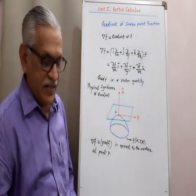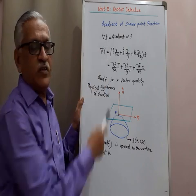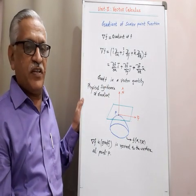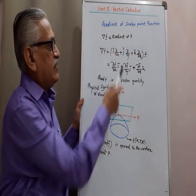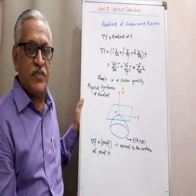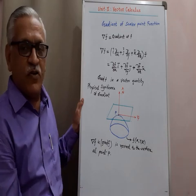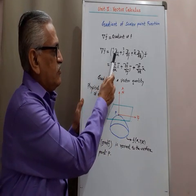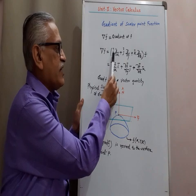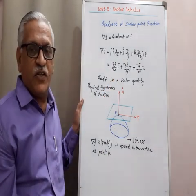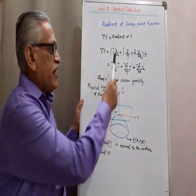Gradient is defined as the del operator operated on a scalar point function f. It is written as del f, and to obtain the value, we substitute the del operator, which is i into ∂/∂x plus j into ∂/∂y plus k into ∂/∂z.